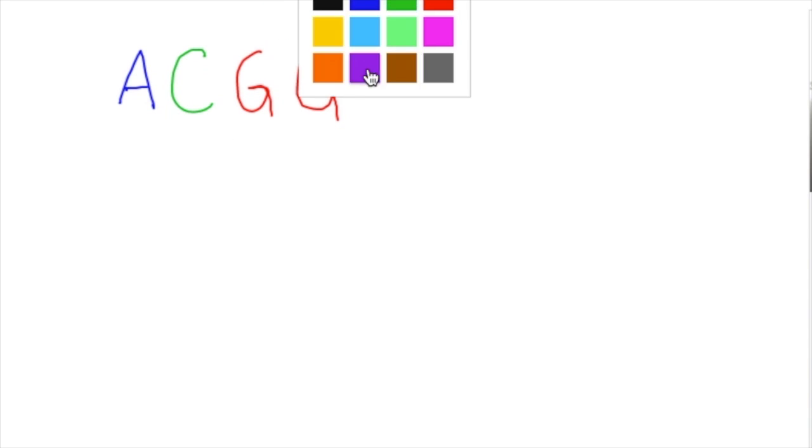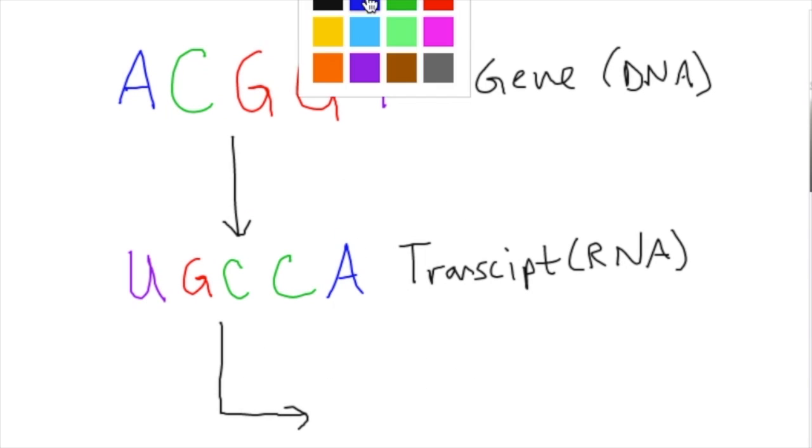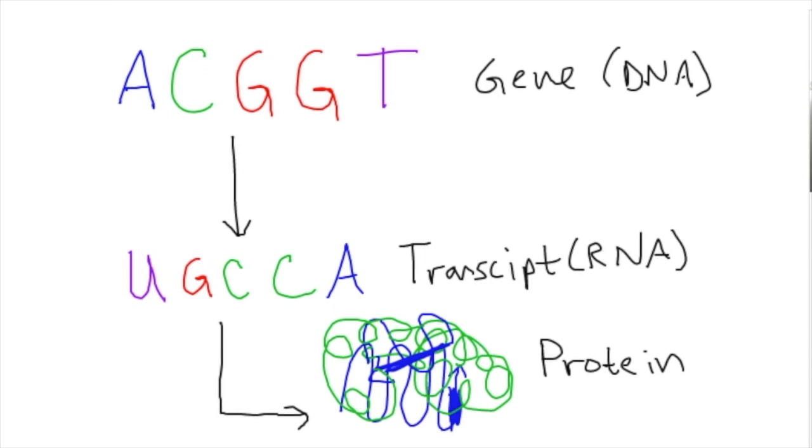And DNA goes through a series of steps to take a string of nucleotides, which are A, C, T, or G, and uses them as a template to make RNA, which ultimately makes protein. Believe it or not, these squiggly lines making up the protein actually means something, but that's for another video.